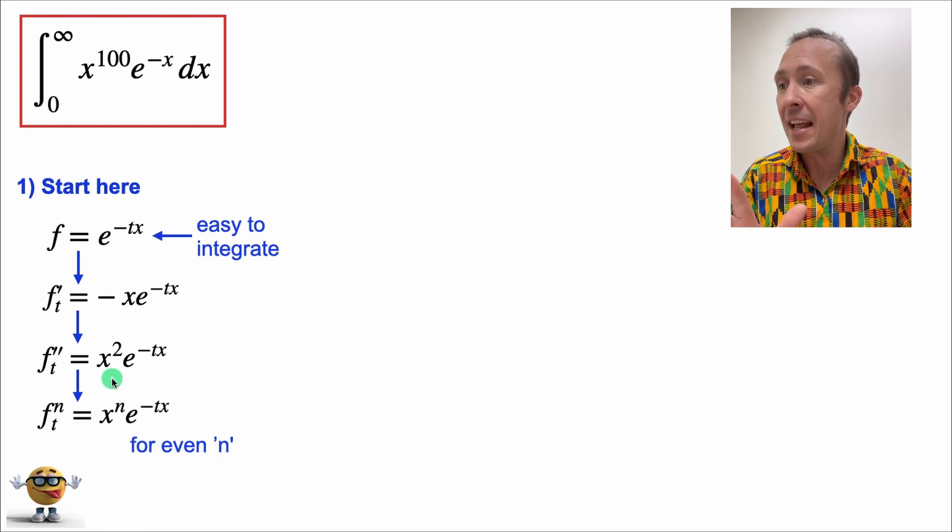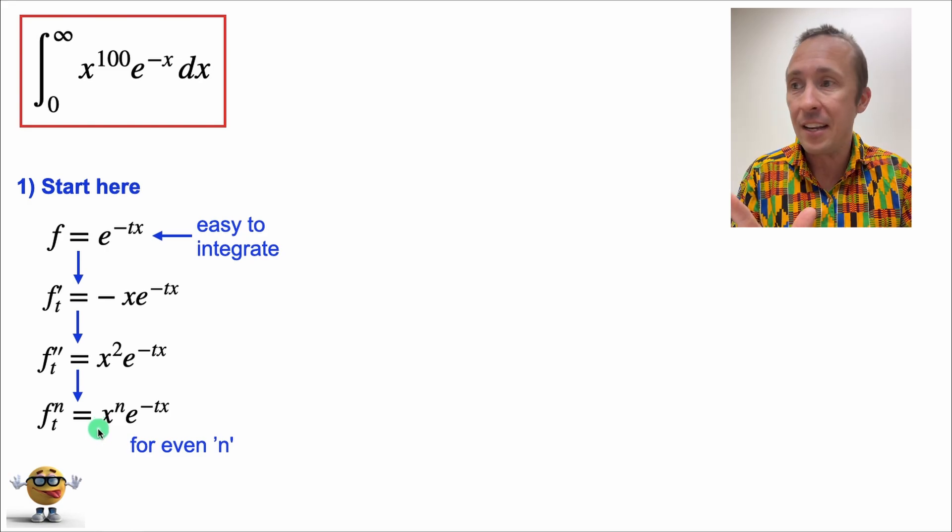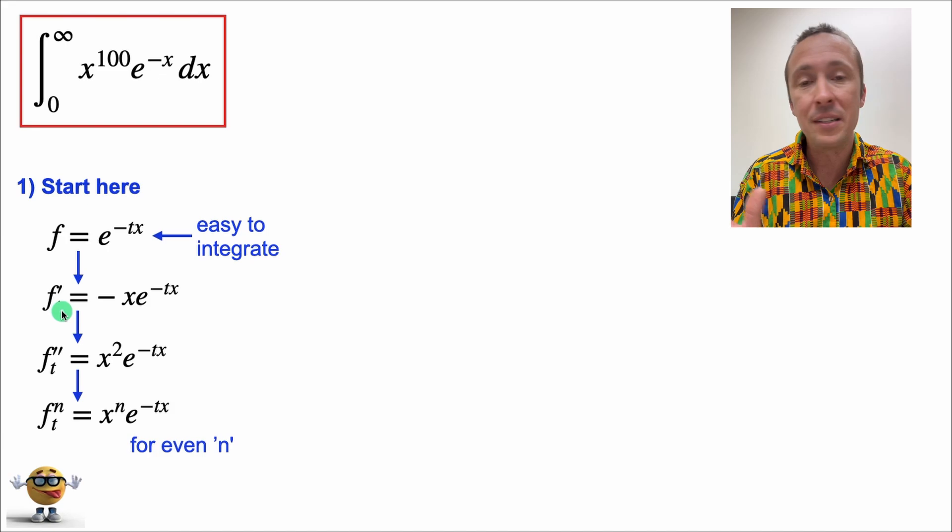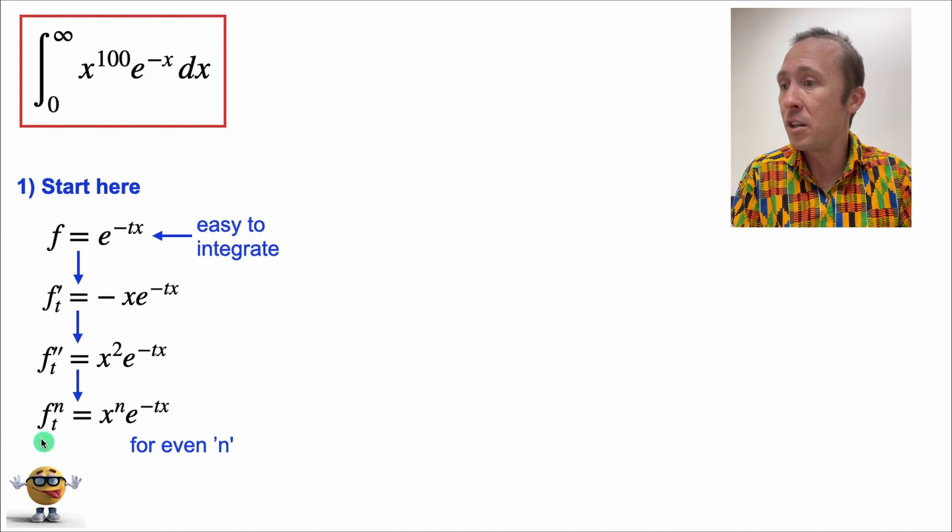Now this is true for even n's, because if we have even n's, like take the derivative two times or four times, there's no negative sign here. If this was an odd number, then we'd have a negative sign, just like when we took the derivative once. We have an even number here, 100, so we're going to use this one right here for even n. Now this is the trick.